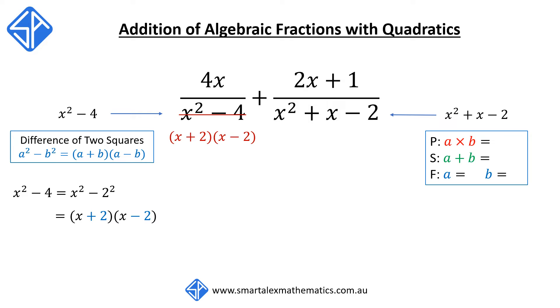Using the PSF method, we're looking for two numbers a and b that multiply to give the constant of negative 2. And the same two numbers a and b must add to give the coefficient of x, which in this case is positive 1.